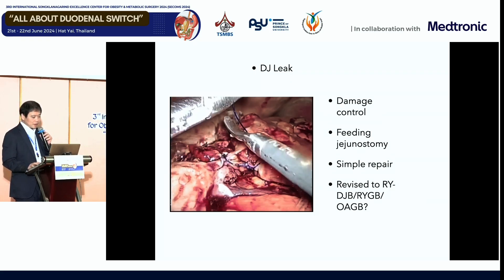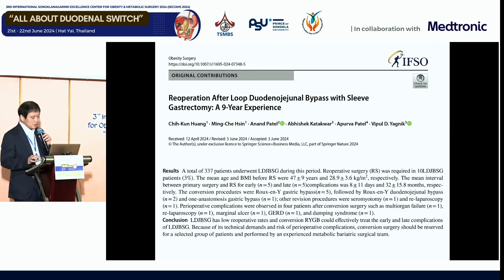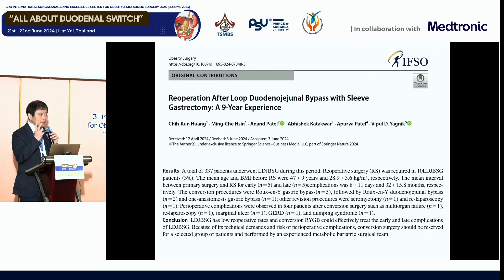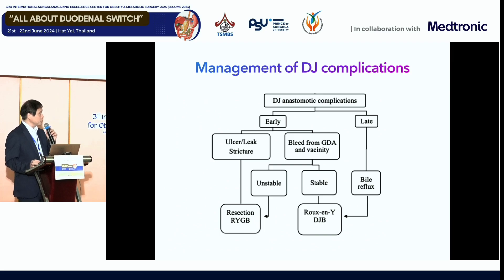I'm going to show you my experience — we just published a paper about this. This is a re-operation after sleeve DJB for our nine-year follow-up experience. We totally did 337 cases, and there were 10 cases that needed a re-operation. Re-operation does not mean revision — it means the patient needs a second operation for sleeve issues or duodenojejunal issues. Some were from leak — totally there are two leaks — and some were from sleeve stricture or kinking.